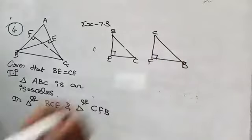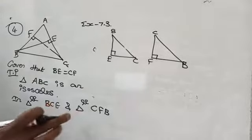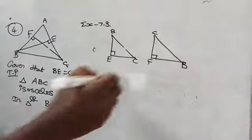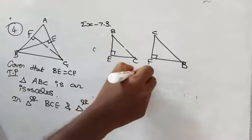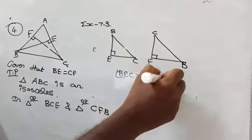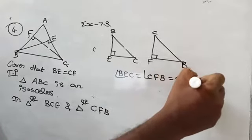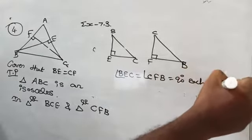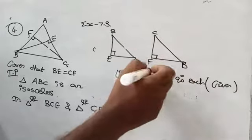The angle is 90 degrees. It is given. Angle BEC equal to angle CFB equal to 90 degrees — this is given.